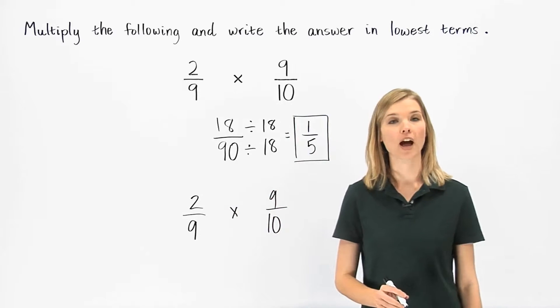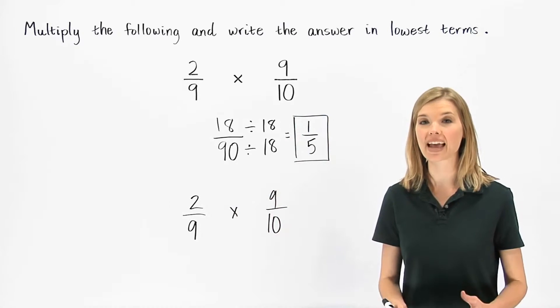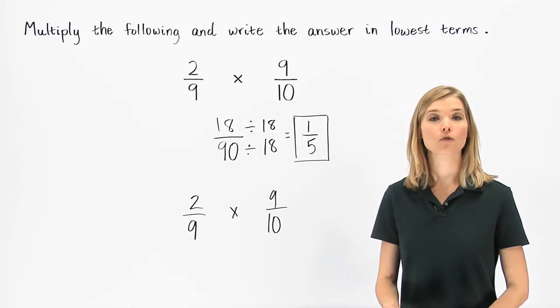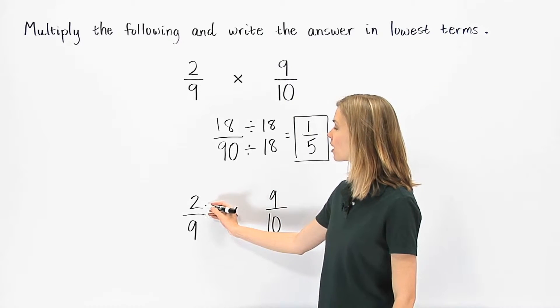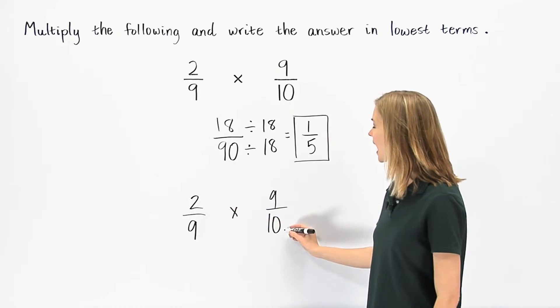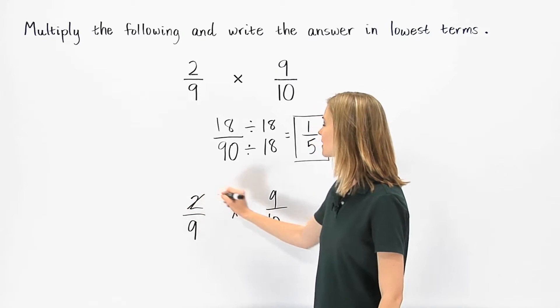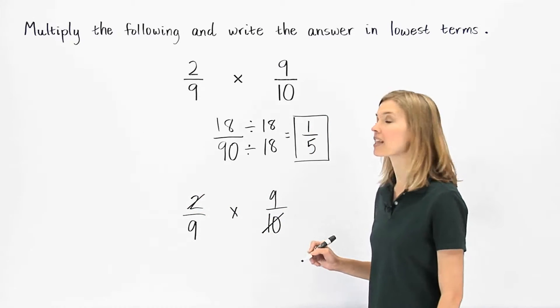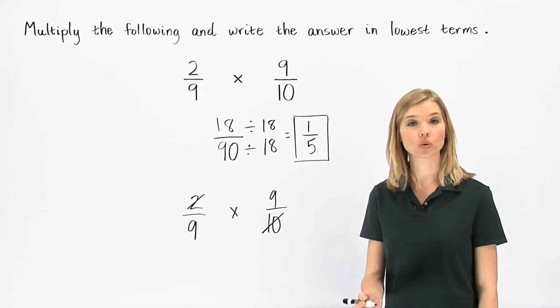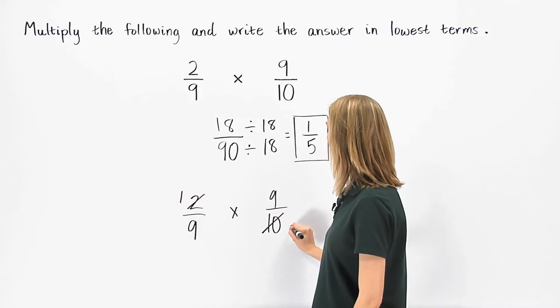When multiplying two fractions, always try to cross-cancel if possible. For example, since we have a 2 in the numerator of one fraction and a 10 in the denominator of the other fraction, we can cross-cancel by dividing by their greatest common factor, which is 2, to get 1 and 5.